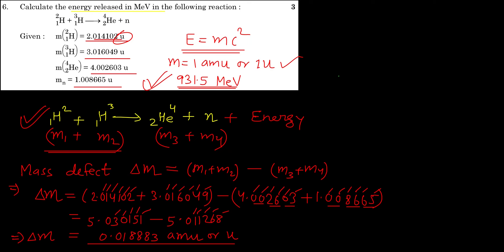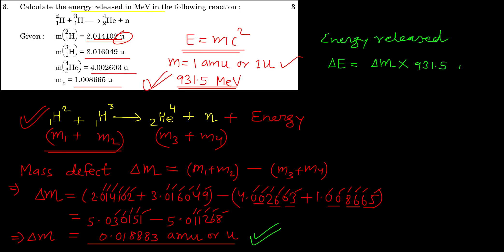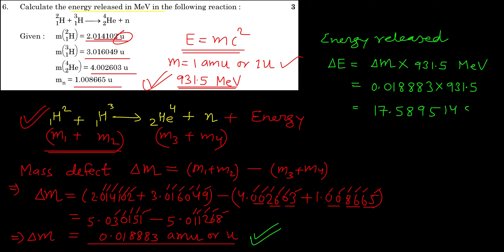Now for the second part — calculating the energy released. As stated earlier, to find ΔE you simply multiply the mass defect Δm by 931.5 MeV/u. So: ΔE = 0.018883 × 931.5 = 17.5895 MeV.